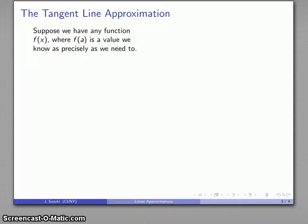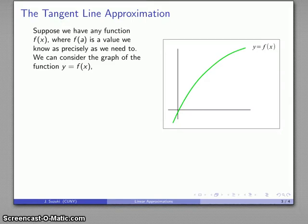And where this comes from is what's called the tangent line approximation. This goes back to the idea that the slope of the secant line has as its limit the slope of the tangent line. So suppose I have some function f of x, where f of a is some value we know as precisely as we need to, and we might consider our graph of y equals f of x. Because I know the value of f of a, that corresponds to some point (a, f(a)) that I can locate precisely. So that's some place along the graph there.